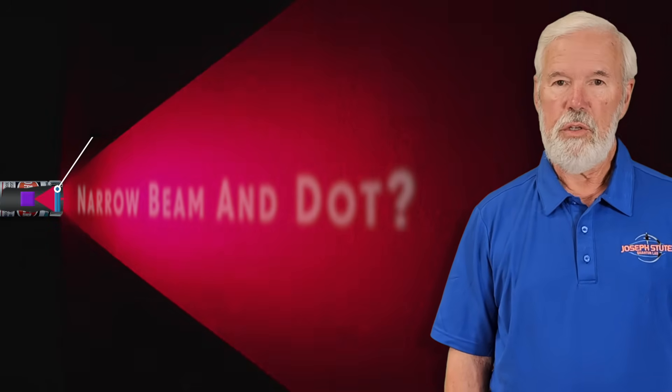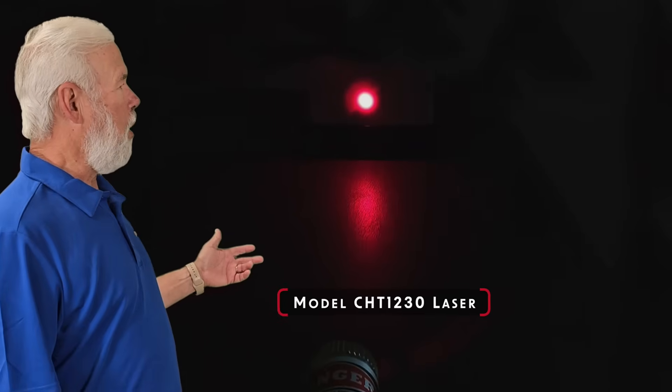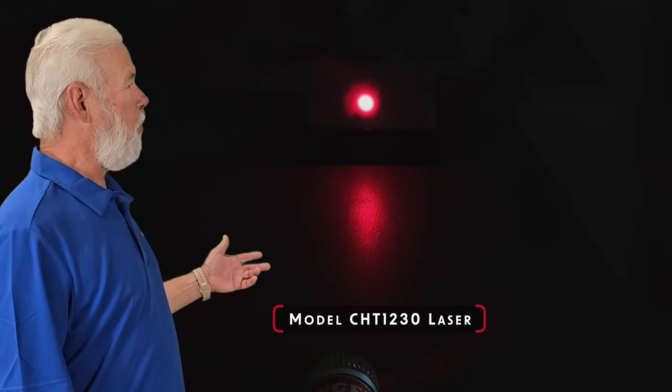Lenses are used to focus the laser light into a narrow beam, but the photons still diverge. Here is an example using the model CHT-1230 laser.